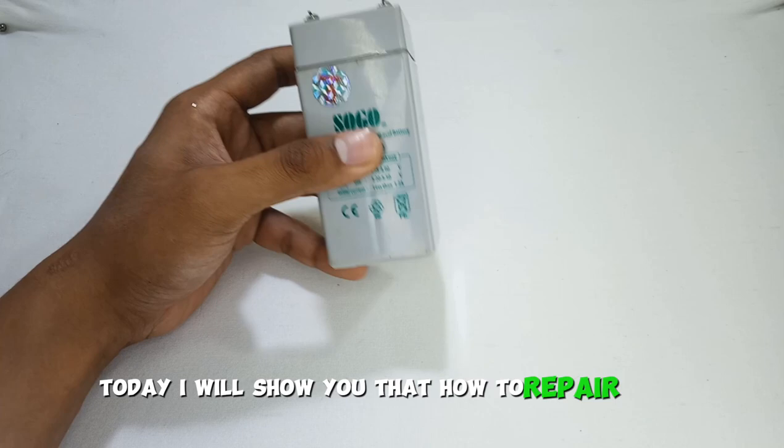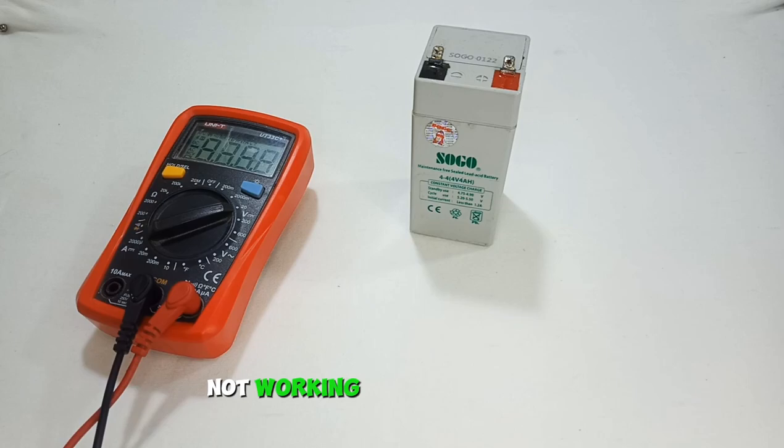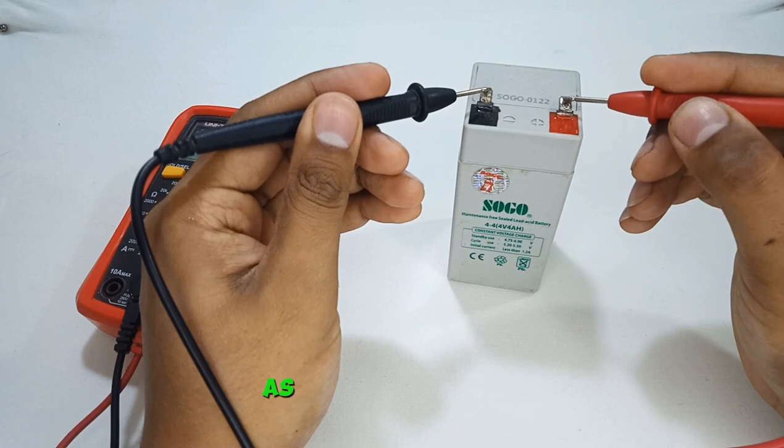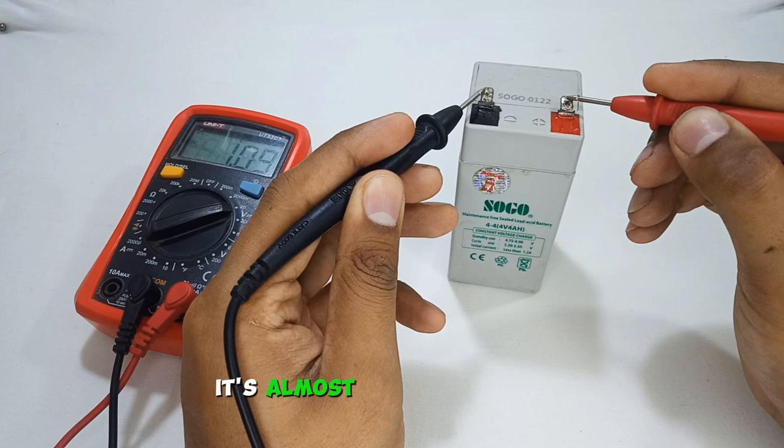Hi, welcome to my channel. Today I will show you how to repair these 4-volt dead lead acid batteries. Let me show you first that this is not working and totally dead. As you can see, it's giving 1 volt. It's almost in dead condition or it has not been charged for a long time.